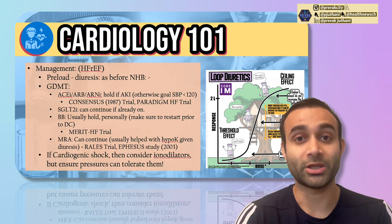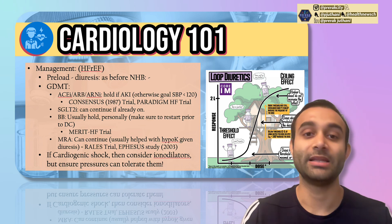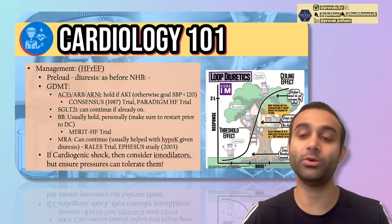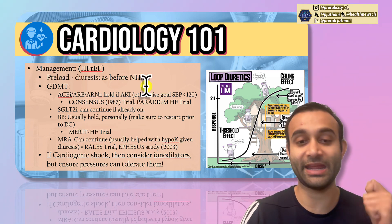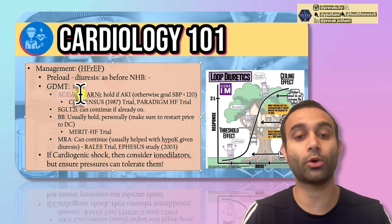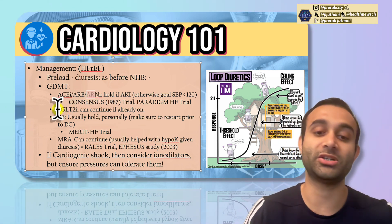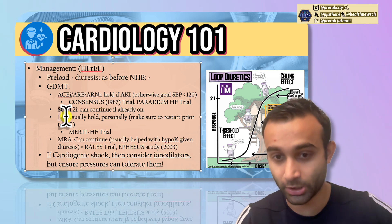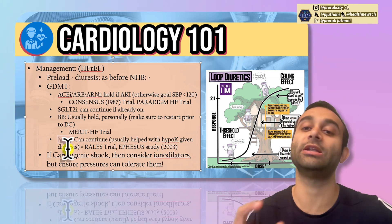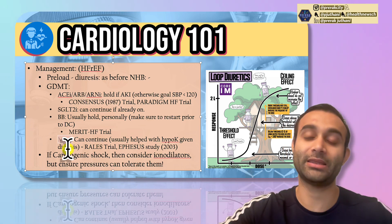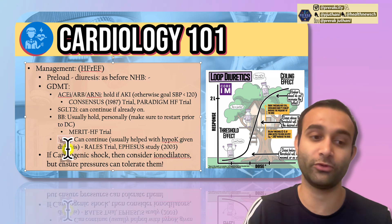The other key thing when someone comes in with a heart failure exacerbation is GDMT — guideline-directed medical therapy. Once you get their fluid off, anyone with heart failure with reduced ejection fraction — EF less than 40% — should be on an ACE inhibitor or an ARNI, such as Entresto, which is an angiotensin receptor neprilysin inhibitor. They should also be on an SGLT2 inhibitor, a beta blocker, and a mineralocorticoid receptor antagonist. These four medications are very important to continue or start, as they have been shown to improve mortality and reduce future readmissions.